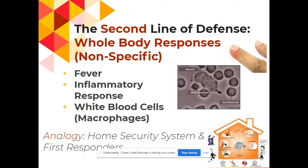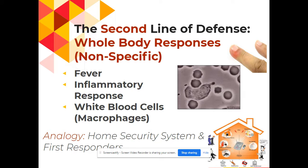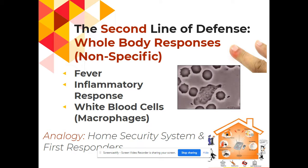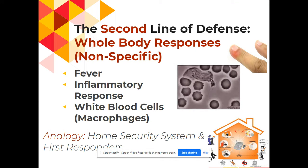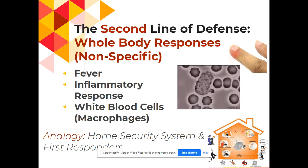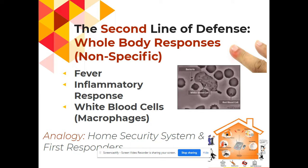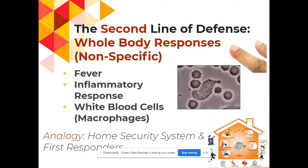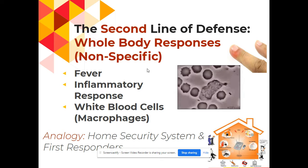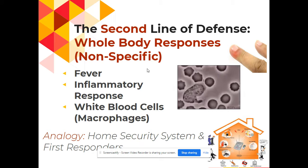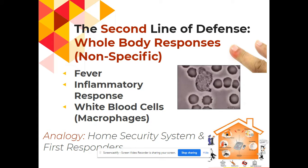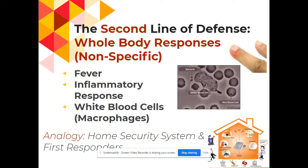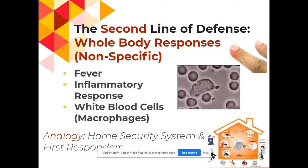The second line of defense involves whole body responses that aren't specific to any type of pathogen. It can't differentiate between different kinds of cold viruses or influenza — it just fights off anything potentially harmful. One example is fever. Your body can elevate its temperature. Normal body temperature is about 98.6 degrees; up to 100 degrees is still considered normal, but 100.4 up to 102 is called a low-grade fever.